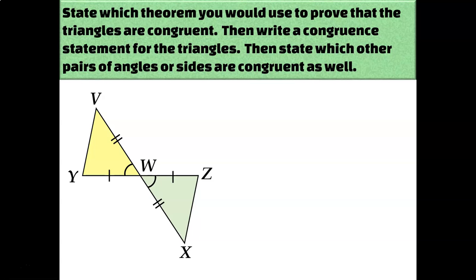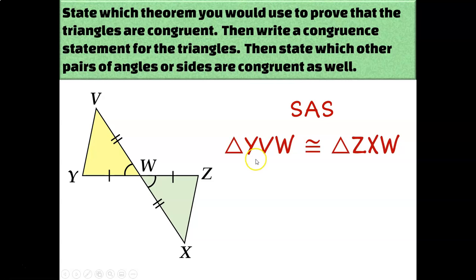In our next example, can we prove that these two triangles are congruent based on the diagram? Yes — they have two pairs of corresponding sides that are congruent, and their included angles are congruent as well, so I can use side-angle-side. If I call the first triangle, the yellow one, triangle YVW, I have to call the other triangle ZXW. Y is the vertex across from the double-marked side, V is across from the single-marked side, and W is the angle with a congruence mark — so correspondingly it's ZXW.